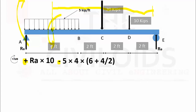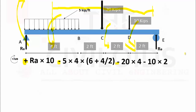The next load acting on the beam is the 20 kip load. Its moment will be equal to 20 multiplied by its perpendicular distance of 4 feet, and the sign is negative because it is also producing an anti-clockwise moment. The next force is the 10 kip force and its moment will be 10 × 2, also negative as it is producing an anti-clockwise moment. RE is ignored because the perpendicular distance of RE to point E is zero, so it produces no moment about point E.